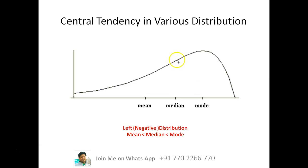So just remember, you have to look at the tail. The tail goes towards the left or towards the negative side of the axis. So this is a left or negative distribution and then you can know mean is the least in such kind of cases, then median, then mode.